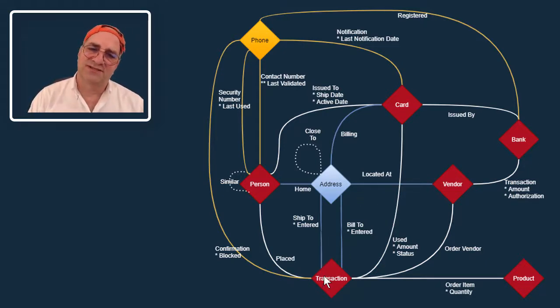So like on this transaction here, we have a ship-to address and a built-to address. And so this address, the same address node could be used for multiple things, be in multiple relationships. This address, they might have a home address. That same address node or a different address node might be the ship-to address for this order or the built-to for this order. It might be the billing address for the card.